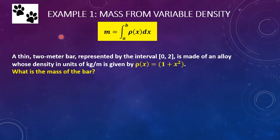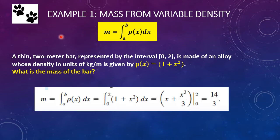When we apply the formula, it's the integral from 0 to 2 of 1 plus x squared. The integral of 1 is x, and the integral of x squared is x cubed over 3, evaluated from 0 to 2. When we plug those in, we get a value of 14 thirds. Very straightforward.